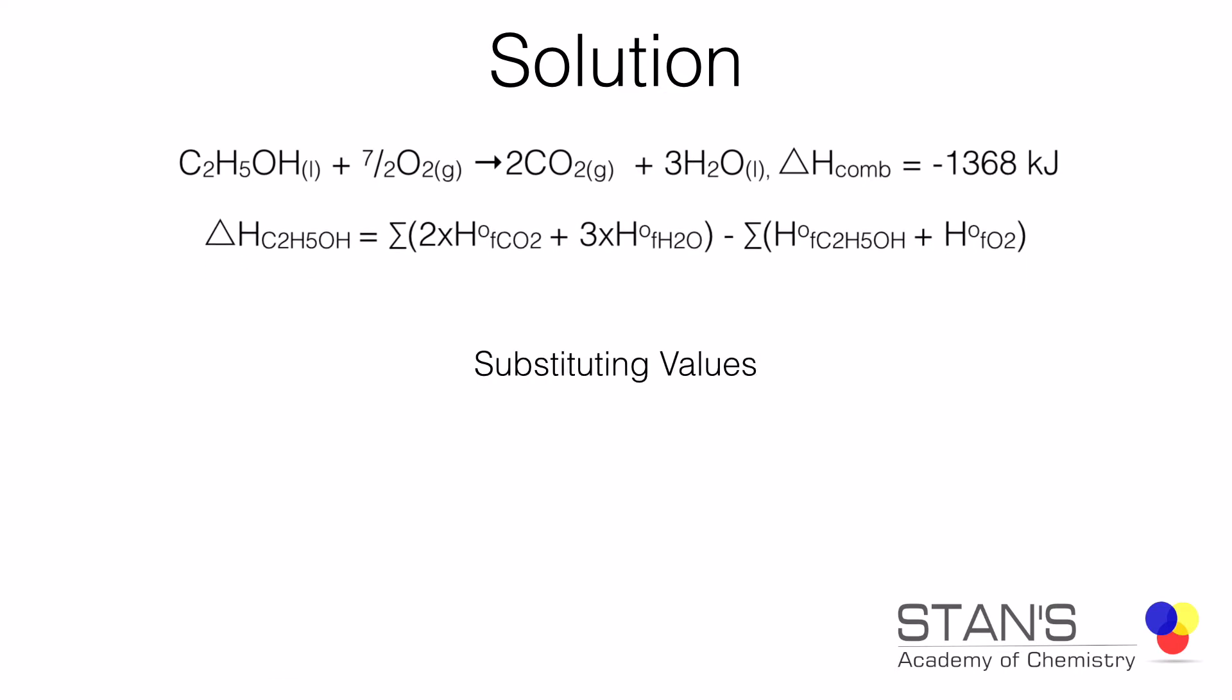Now substituting the values. The enthalpy of combustion, as already seen, is minus 1368 kJ. Heat of formation of carbon dioxide is minus 393.5 kJ, and we have 2 moles of carbon dioxide, therefore we multiply it by 2. Heat of formation of water is minus 285 kJ, and 3 moles of water is formed, so we multiply it and add it up together, and we subtract the enthalpy of formation of the reactants.